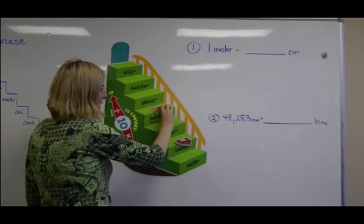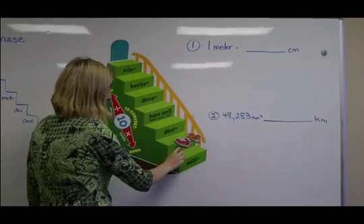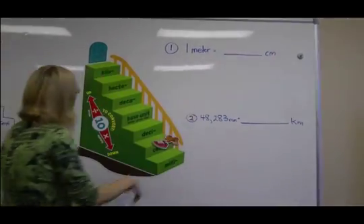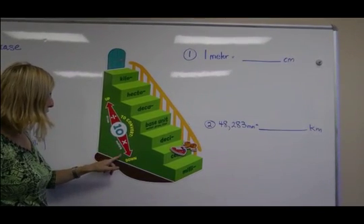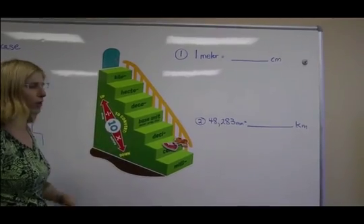And you see that the cat needs to walk one, two steps in order to get to the centimeter unit. If you look on the side of the staircase, if you're going down the staircase to convert units, you multiply by ten for every step that you take.